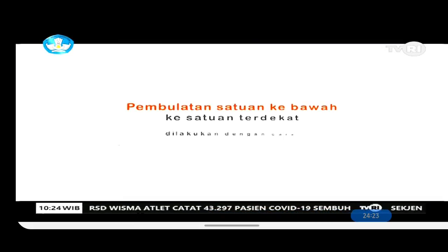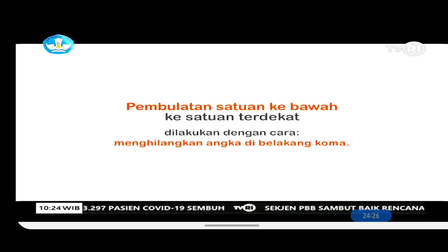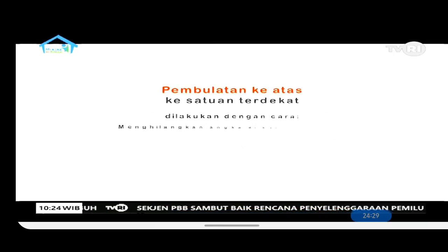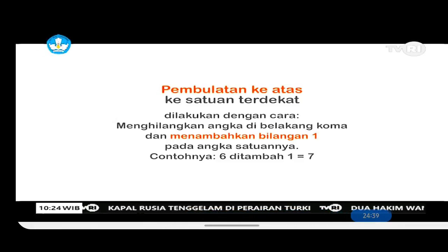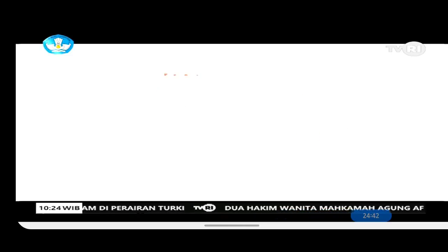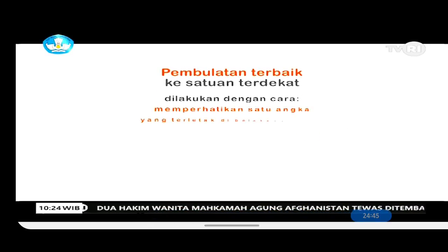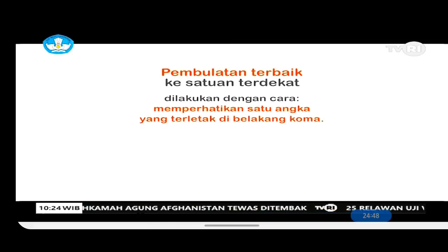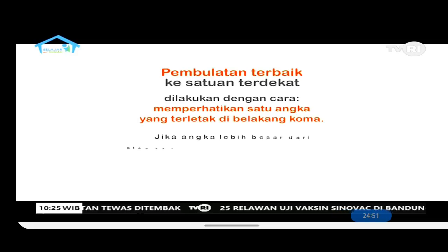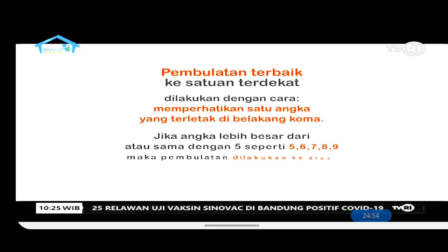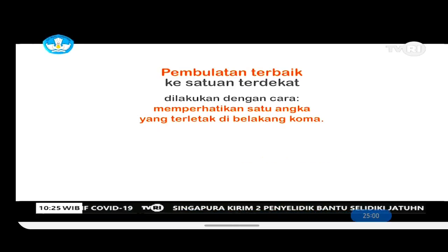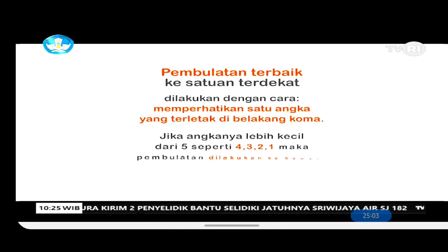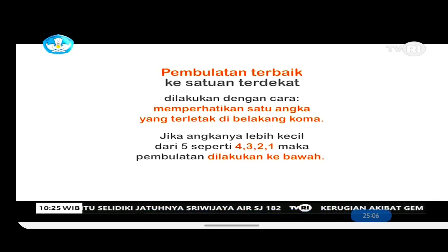Pembulatan satuan ke bawah ke satuan terdekat dilakukan dengan cara menghilangkan angka di belakang koma. Pembulatan ke atas ke satuan terdekat dengan cara menghilangkan angka di belakang koma dan menambahkan bilangan 1 pada angka satuannya, contohnya 6 ditambah 1 sama dengan 7. Pembulatan terbaik ke satuan terdekat dilakukan dengan memperhatikan satu angka yang terletak di belakang koma: jika angka lebih besar dari atau sama dengan 5 (seperti 5,6,7,8,9) maka pembulatan dilakukan ke atas; jika angkanya lebih kecil dari 5 (seperti 4,3,2,1) maka pembulatan dilakukan ke bawah.